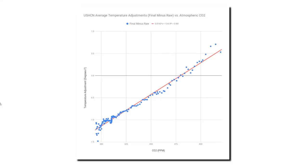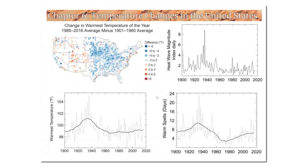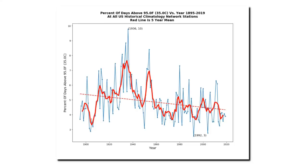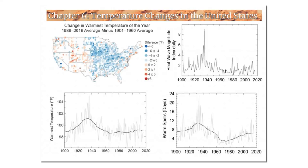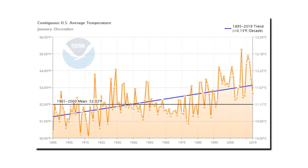The proper way to do science is to look at the data and adjust your theory to match the data, not the other way around. It's pretty difficult to justify the concept that the United States is hotter now than it was during the 1930s, because if we look at the National Climate Assessment, they show that heat waves were much worse during the 1930s. And here's a similar graph which I generated from the NOAA daily temperature data, showing the percent of days above 95 degrees Fahrenheit at all United States Historical Climatology Network stations. Hot weather was much more common in the United States prior to 60 years ago, which is very similar to the graph from the National Climate Assessment. The adjustments which NOAA is making to the U.S. temperature data are simply not credible.